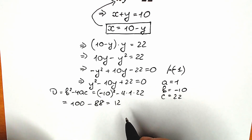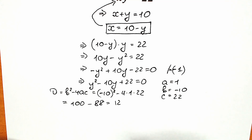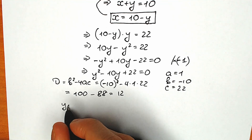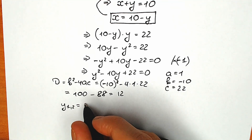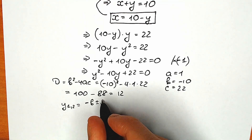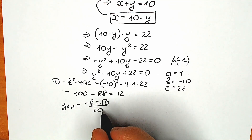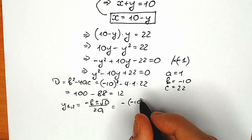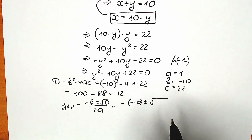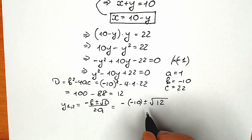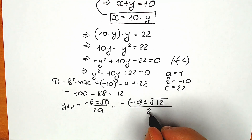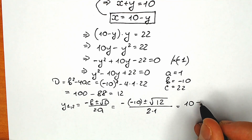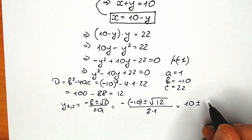Our discriminant equals 12, so it means that right here we have two pairs of roots, two real number solutions, because discriminant is positive. So our y₁ and y₂ equal to: minus b, plus or minus square root of discriminant, all over 2a. Let's plug in: minus b — b equals minus 10, so minus b is plus 10 — plus or minus square root of 12, all over 2 times 1. Now, minus minus is plus, so we have 10 plus or minus. Square root of 12 we can write as square root of 4 times 3, and we divide by 2.